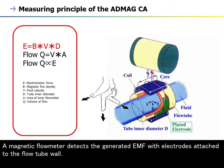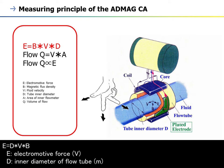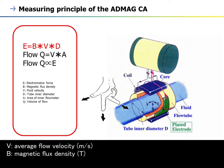A magnetic flow meter detects the generated EMF with electrodes attached to the flow tube wall. The formula is: E equals D times V times B, where E is electromotive force in volts, D is the inner diameter of the flow tube in meters, V is the average flow velocity in meters per second, and B is the magnetic flux density in Tesla.